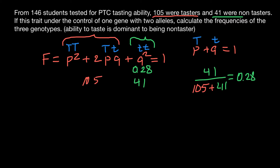That means the frequency of people with the dominant phenotype is 0.72. We can also say 72 percent are tasters and 28 percent are non-tasters. Remember: all calculations are done on a scale from zero to one, and if we need answers as percentages, we multiply our final answer by 100.